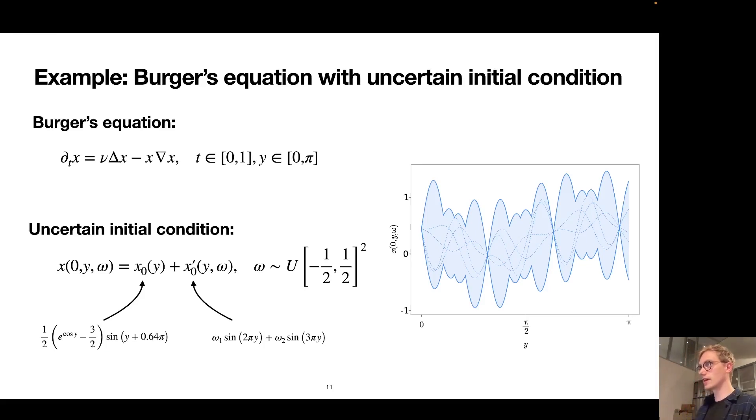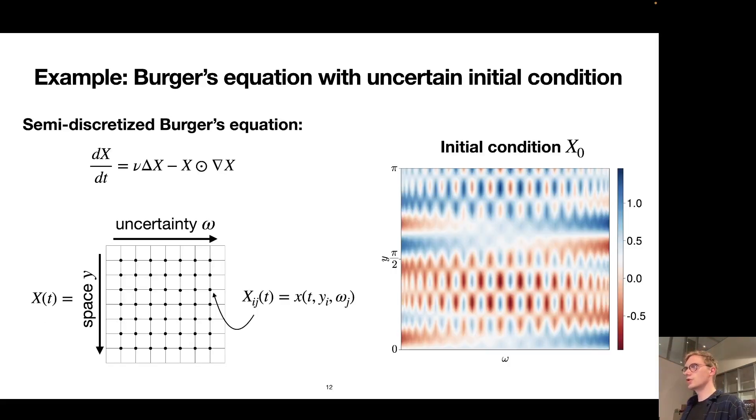To show you how everything I talked about so far can come together, I would like to briefly go over an example from the realm of uncertainty quantification. In particular, here I'm interested in understanding how the solution to this PDE, which is the non-linear Burgers equation, behaves in consequence to different initial conditions as dictated by the realization of some random variable omega here according to this function. On the right you see that depending on how this uncertainty is realized, the initial condition can actually vary quite a bit within this envelope.